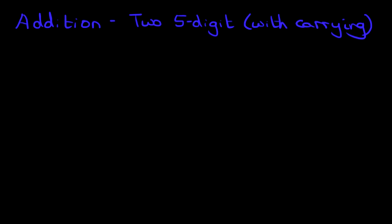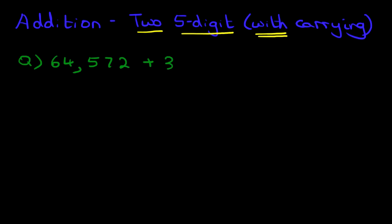Hello and welcome to the tutorial on addition. In this tutorial we will learn how to add two five-digit numbers, and this time we are going to do this with carrying. Let's have a look at the question we are going to be working through. So what is 64,572 plus 38,529? Now this looks tricky, doesn't it? Well, it won't be.